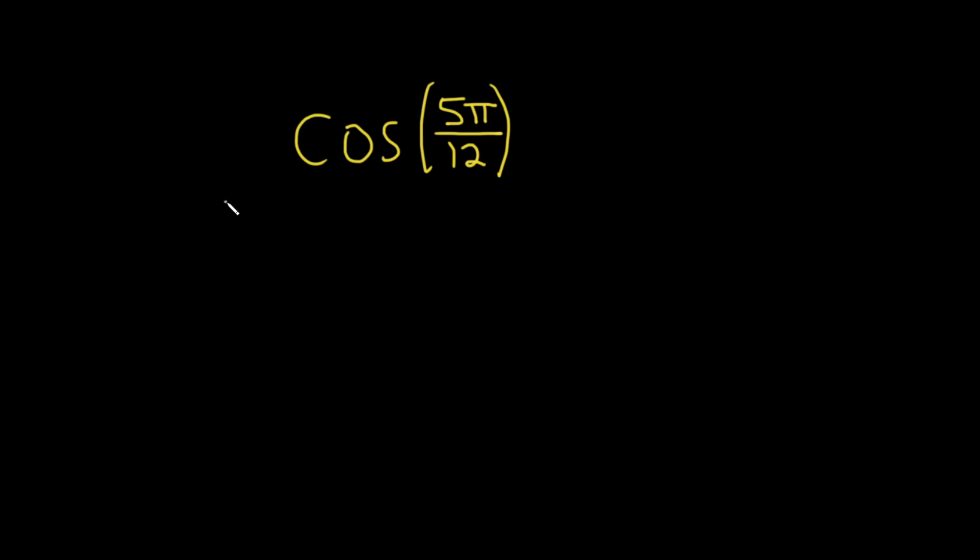So I am thinking we can write it as follows. 5π over 12 is the same thing as 2π over 12 plus 3π over 12. And the reason I picked 2 and 3 is because when you simplify this, 2π over 12 is the same thing as π over 6, and that's an angle for which we can compute a trig function value quite easily.